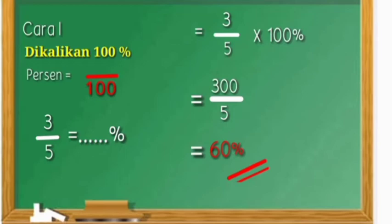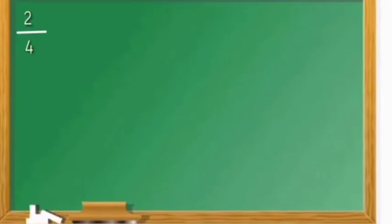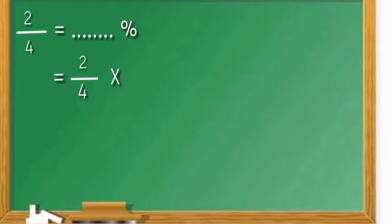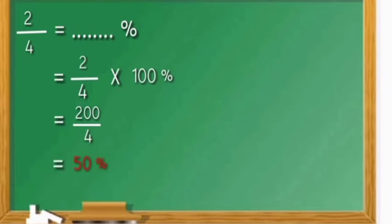Contoh yang lainnya: dua per empat sama dengan berapa persen? Dua per empat dikalikan seratus persen. Dua kali seratus sama dengan dua ratus dibagi empat, sama dengan lima puluh persen. Itu cara yang pertama.